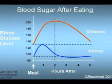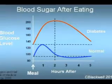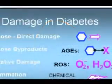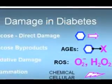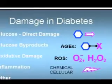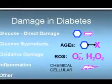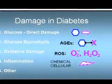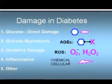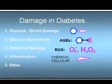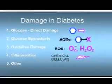Cells must find other sources of energy. Protein and fat metabolism are affected. Damage may occur directly from the elevated glucose, chemical byproducts of glucose, excess oxidation, increased systemic inflammation, and other processes.